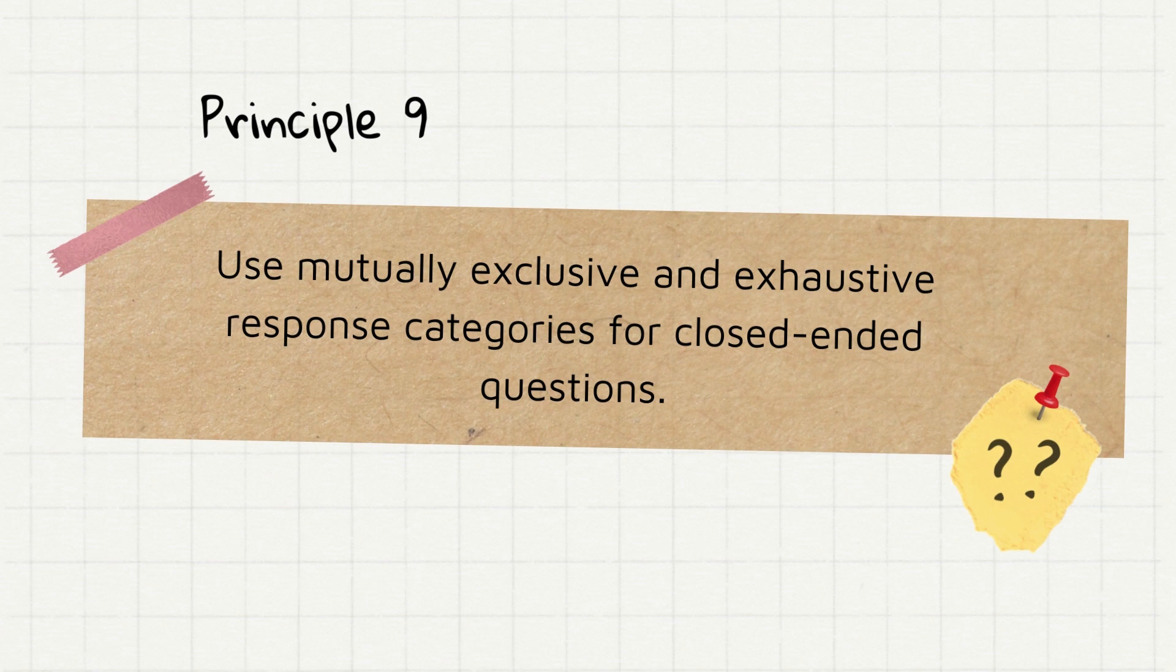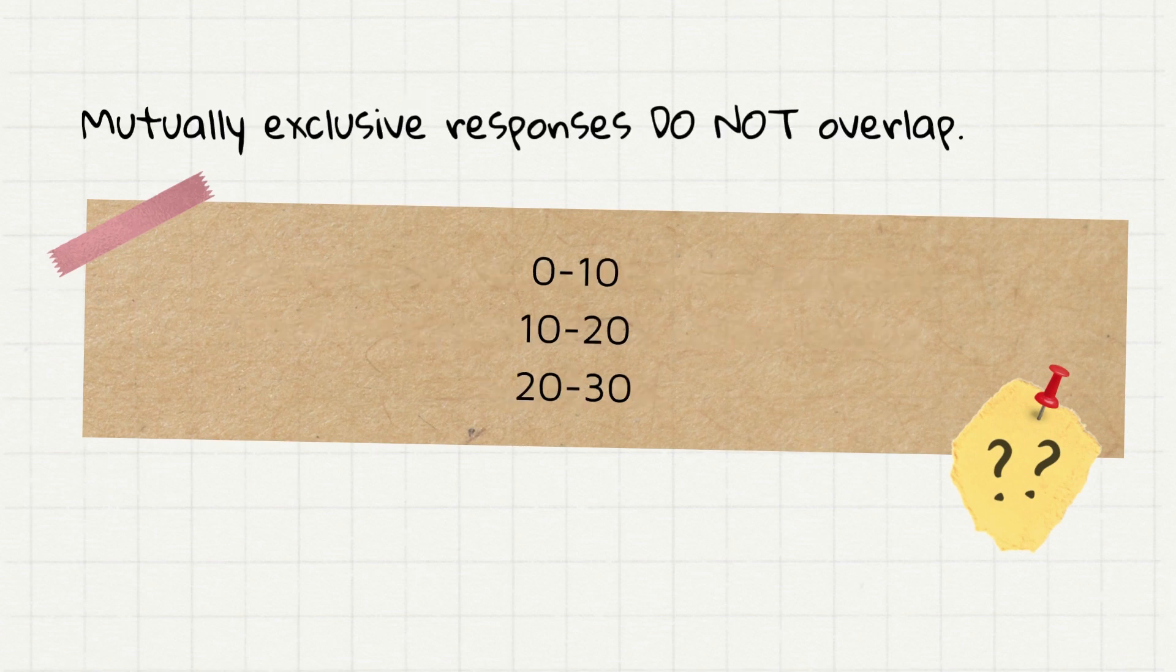Now, if you choose closed-ended questions, then Principle 9, use mutually exclusive and exhaustive response categories for them. Mutually exclusive response categories do not overlap. So, look at this example. 0 to 10, 10 to 20, 20 to 30. As you can see, Category 1, 0 to 10 overlaps with Category 2 since it also has this value of 10.